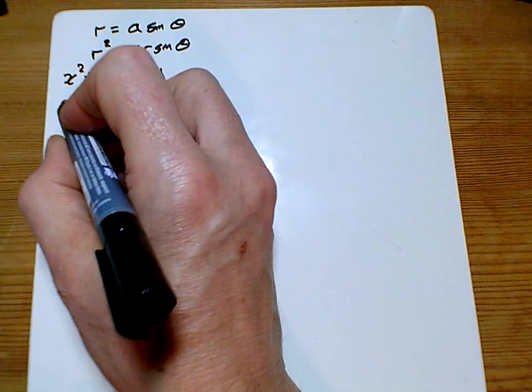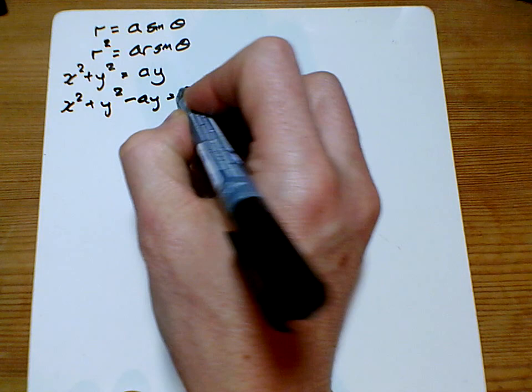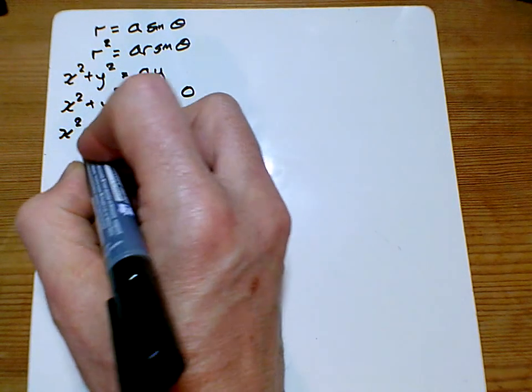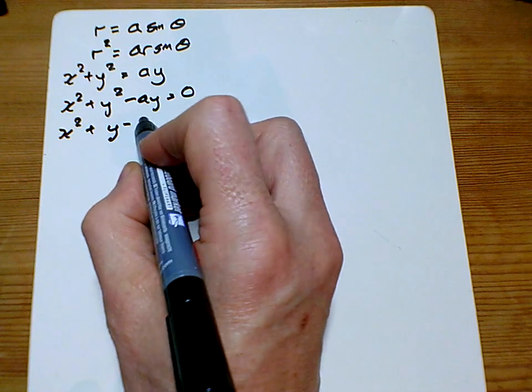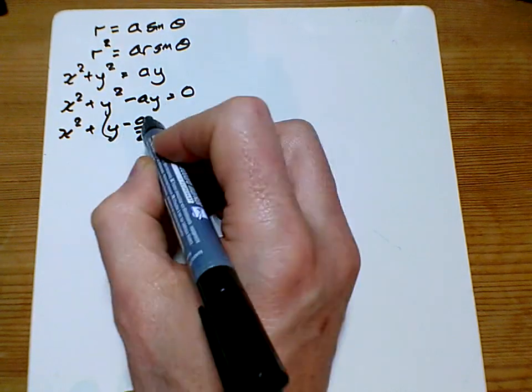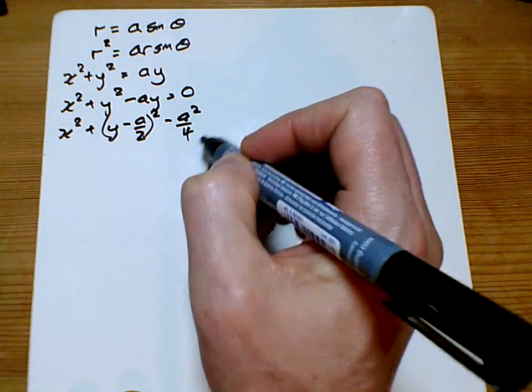What we're going to do, we'll take all of that over one side, so I'll get minus A Y equals zero here, and I'm going to complete the square for this part here. So I'm going to get Y minus A over 2 all squared minus A squared over 4 equals zero.